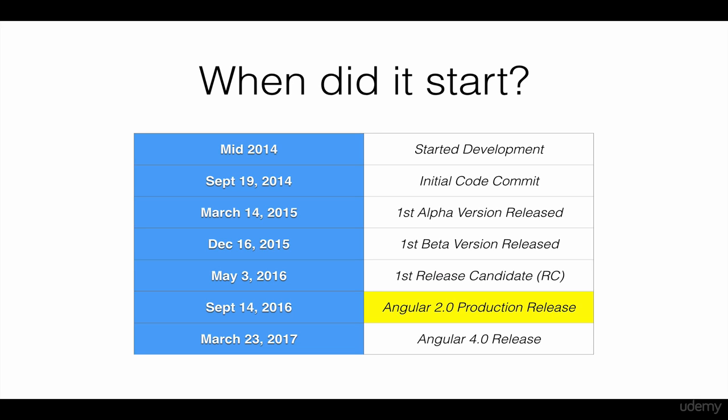In mid-2014, the design and development of Angular 2 was started. On September 19 of that year, the first code commit was done under a GitHub account. On March 14, 2015, the first alpha version was released, and the beta version was also released that same year. On May 3, 2016, the first RC, or release candidate version, was unveiled. And finally, on September 14 of that same year, the Angular 2 release version was released.